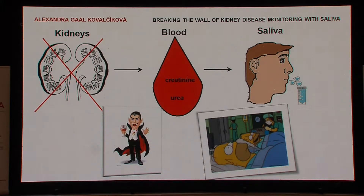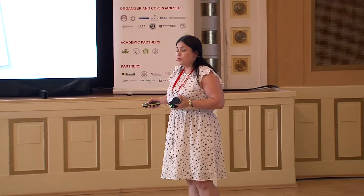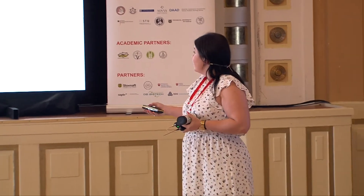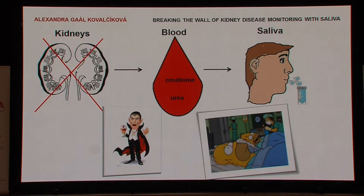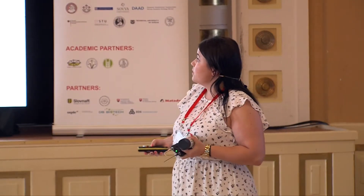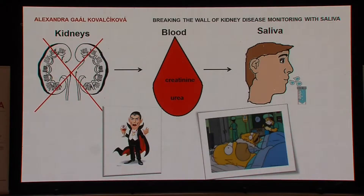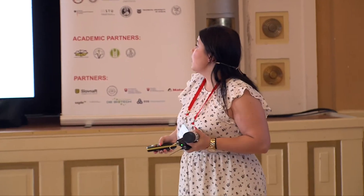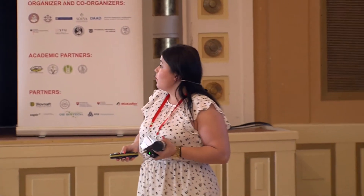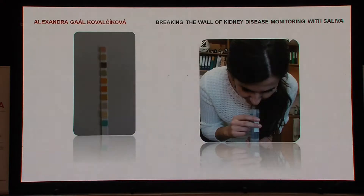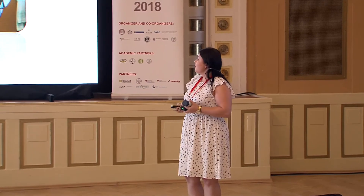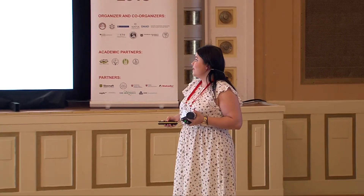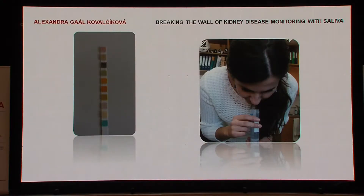It would be beneficial if an alternative body fluid to blood was used for the assessment of kidney function. The increased concentration of plasma creatinine and urea creates a concentration gradient for the diffusion from blood to saliva. The saliva could represent a non-invasive replacement of commonly used blood collection. Using saliva in clinical practice would eliminate problems associated with repeated blood collections. Patients could collect saliva even at home and send it to the laboratory without stress or pain, or could use home monitoring test strips like this.